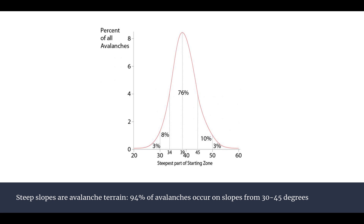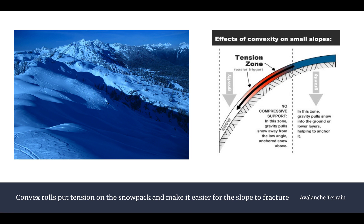Most avalanches happen on slopes between 30 to 45 degrees. As you can see from this chart, about 94% of avalanches occur on slopes in that range. Anything below isn't steep enough to pull the snow down the hill, and anything above is hard for snow to hold onto, so there's usually not enough snow accumulation to trigger an avalanche and generate enough force to bury someone.